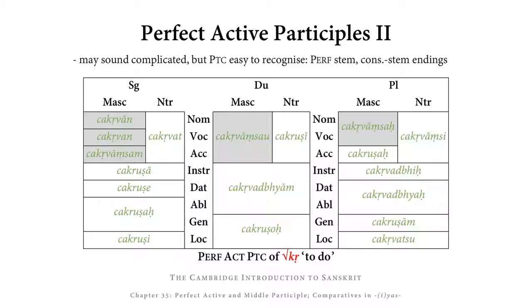In the masculine nominative, vocative, accusative dual, we have CHAKR1 WANS — weak perfect stem CHAKR plus our strong suffix WANS and the ending AU. In the masculine nominative vocative plural, we have CHAKR1 WANS ACH — weak perfect stem CHAKR plus the strong suffix WANS plus the ending ACH. In the accusative plural masculine, however, we have a weak case: CHAKR plus the weak pre-vocalic suffix USH plus the accusative plural ending ACH, giving CHAKRUSHACH.